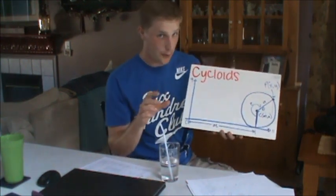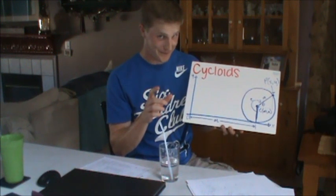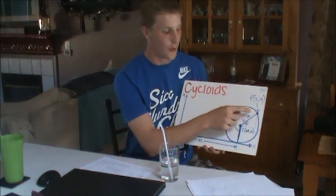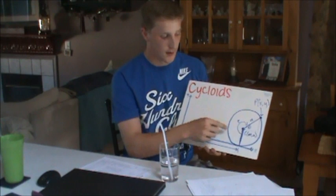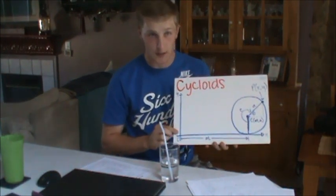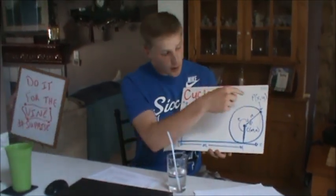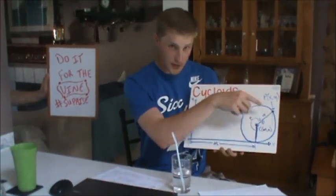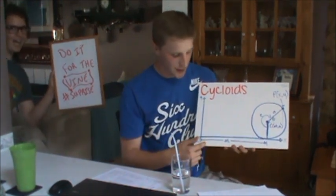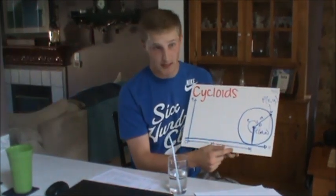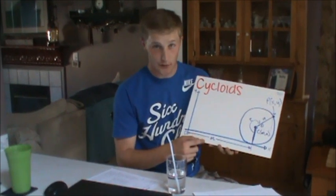Cycloids. Imagine a wheel with the radius of a, and the point P on the wheel starts at the origin. As the wheel goes on this little adventure, it creates dt, which is your distance. And that dt is your cycloid.